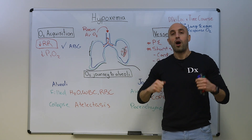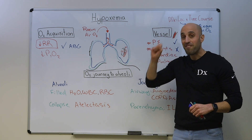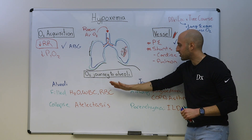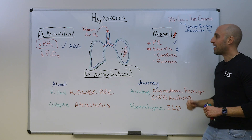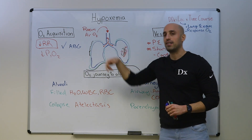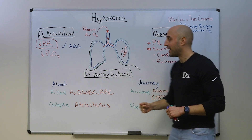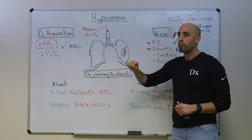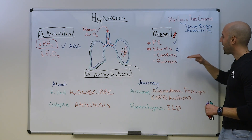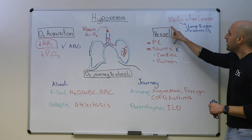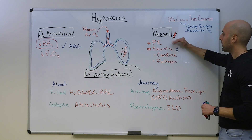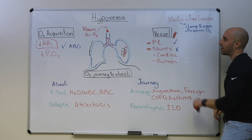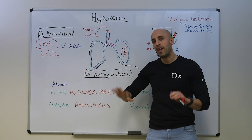To summarize, a practical approach to hypoxemia involves thinking about the normal journey of oxygen, which starts with oxygen acquisition, then the oxygen's journey to the alveoli, and then diffusion into the bloodstream. A lesion at any of these sites can lead to hypoxemia. The way you can make progress immediately at the bedside is through a lung exam and response to oxygen therapy. Patients with pleural or parenchymal pathology will have an abnormal pulmonary exam. Patients with a vascular abnormality will have a normal pulmonary exam, and if they don't respond to supplemental oxygen, you're dealing with a shunt. Patients who have a low respiratory rate may have other exam findings but generally respond quickly to oxygen therapy.